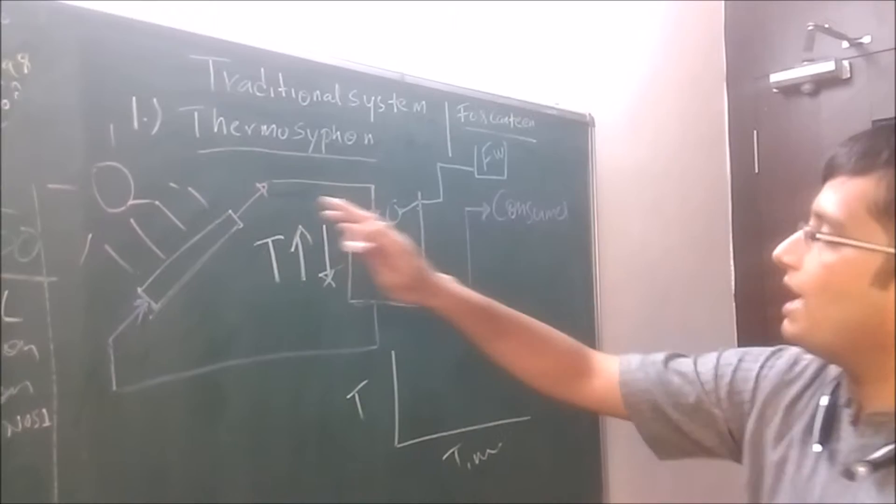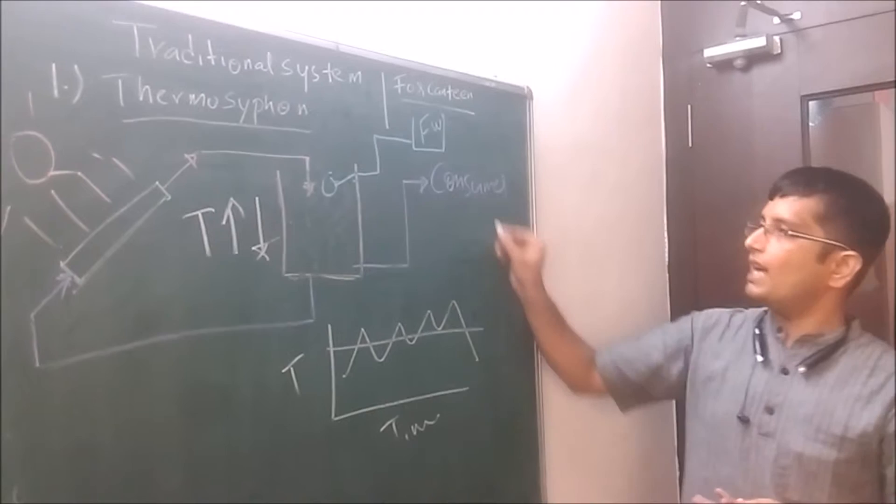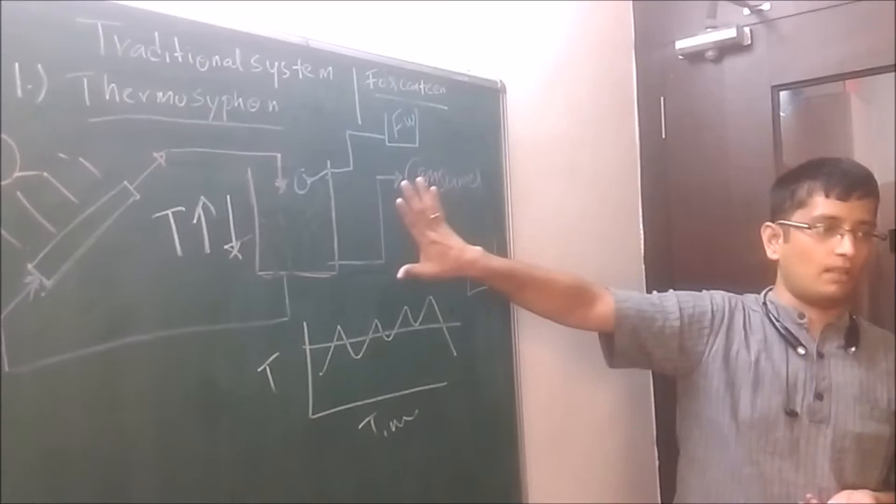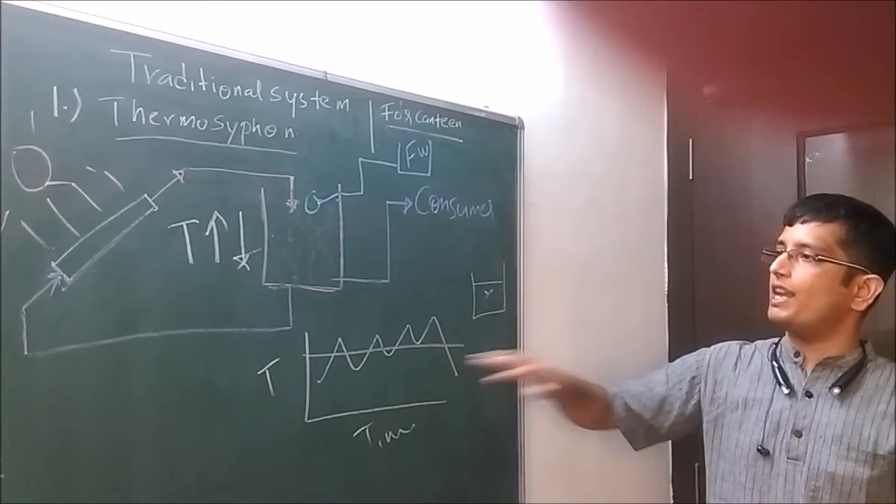So if I look at my temperature versus time profile, depending on the sunlight, depending on the consumer withdrawal, it keeps fluctuating. So I am not able to get a constant temperature value. It is of lot of use if I am able to get a constant temperature value because then I can for sure say that in my canteen application I can save x amount of energy. So now we look at aspiration energies in designing the thermosyphon system essentially for delivering constant hot water temperature.